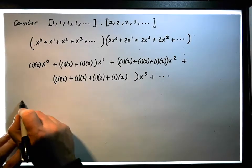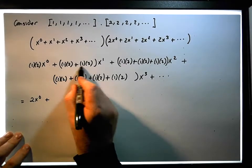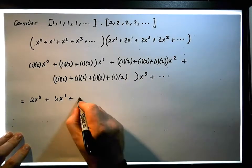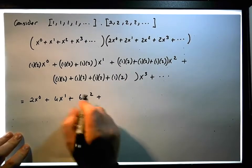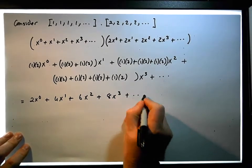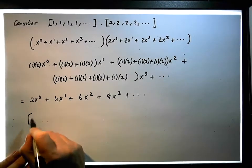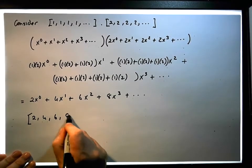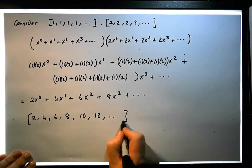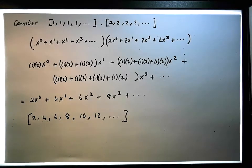What we end up with: 1 times 2 gives us 2x⁰, plus 2 plus 2 gives us 4x¹, plus 2 plus 2 plus 2 — three of them — gives us 6x², plus 2, 2, 2, 2 — four of them — gives us 8x³, plus dot, dot, dot. This power series is encoding the sequence 2, 4, 6, 8, 10, 12, and so on — the even natural numbers.